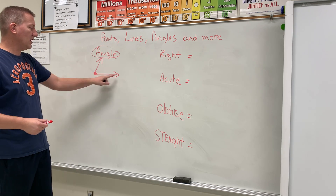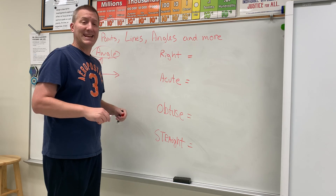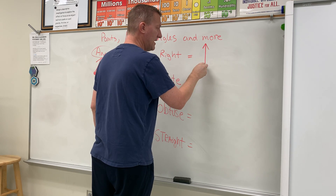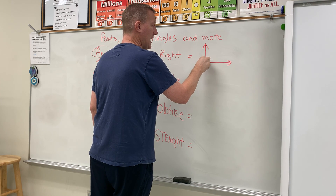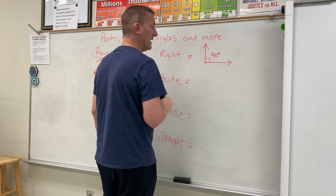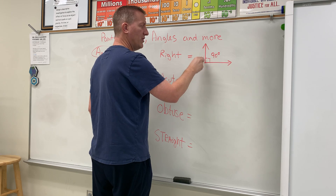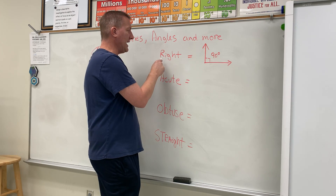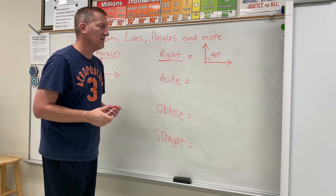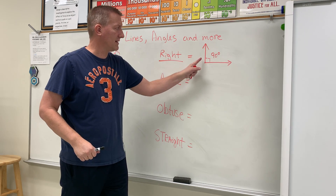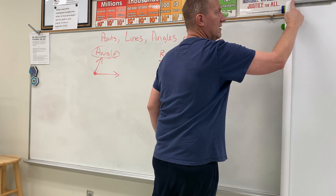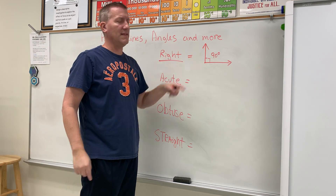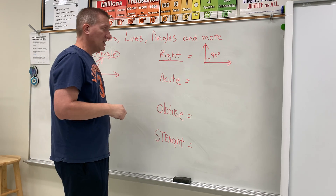A right angle has one ray going straight up and down vertically and one going straight horizontally — we call that a 90-degree angle. It's like the corner of a classroom, the corner of a wall, or the corner of a piece of paper. That is called a right angle.